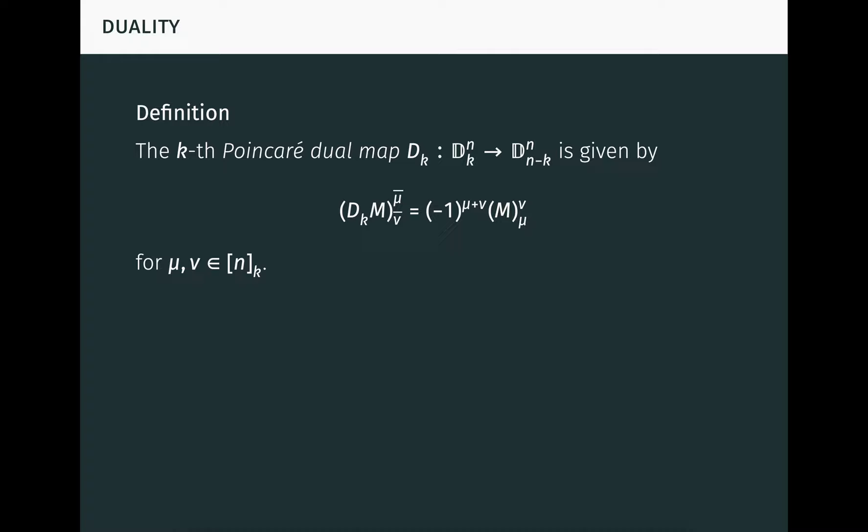The k-th Poincaré dual map dk, from dnk to dnn minus k, is given by this formula. Here we're treating both m and dkm as n choose k by n choose k matrices. Notice that this dual operation involves complementation, transposition, and multiplication by sine factors, just like with the adjoint operation. It's easy to see that dk is linear, and that dn minus k is its inverse. So each dk is a linear isomorphism. You might be wondering why this map is called the Poincaré dual map. I'm borrowing that name most directly from mixed exterior algebra, where this map is a generalization of the Hodge dual or Hodge star map. However, a similar type of duality goes by this name in the theory of manifolds. As an example, for a matrix A, the adjoint of A is just the dual of the n minus first compound power of A, and vice versa, which shouldn't be super surprising since this example motivated the definition of the dual map.